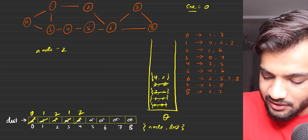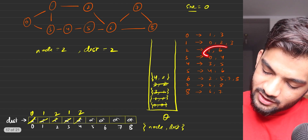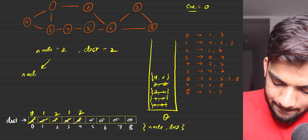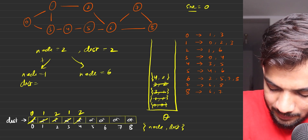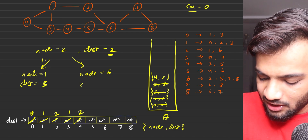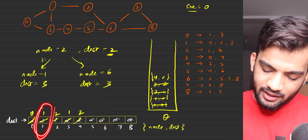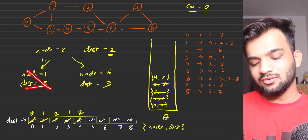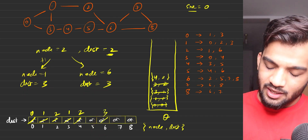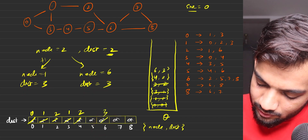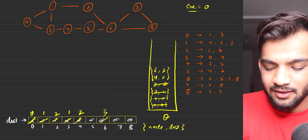Next is node two with distance two. Node two's neighbors are one and six. Going to node one would give distance three — already reached at one, so discarded. Node six was never reached, so we update it to three and push six comma three into the queue and update the distance array.